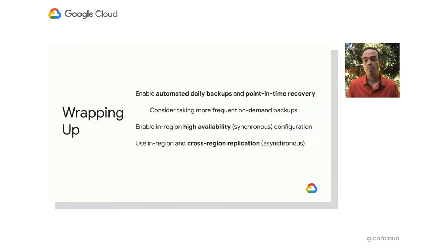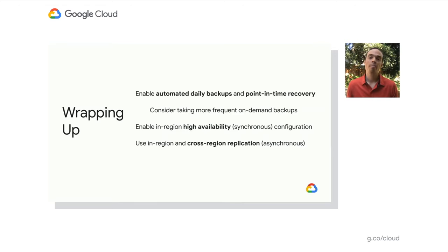To wrap up: for critical systems with Cloud SQL, we recommend enabling automatic daily backups and point-in-time recovery for millisecond-level granular recovery. Consider taking more frequent on-demand backups, especially before schema changes. Next, enable in-region high availability using synchronous replication so Cloud SQL can health-check your instances and automatically fail over without intervention. And finally, consider cross-region replication — asynchronous replication — to maintain a near real-time copy of your data in another region, so in case of a regional failure or disaster, you can make it accessible rapidly with a fairly strict RTO.